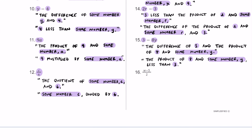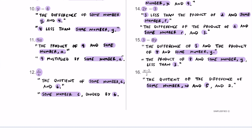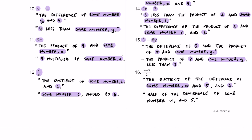For number sixteen, we have w minus five in the numerator and two in the denominator. A verbal sentence is: the quotient of the difference of some number w and five, and two. 'Quotient of' means we're dividing two things — the numerator is the difference of w and five, and the denominator is two. Another translation: half of the difference of some number w and five, since dividing by two means taking half.